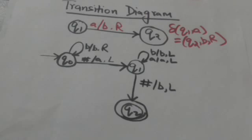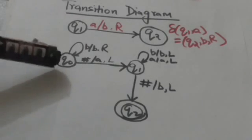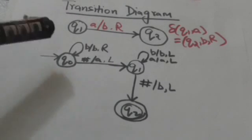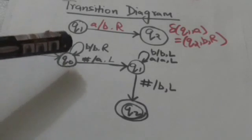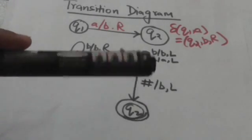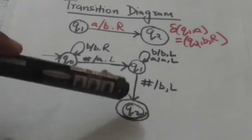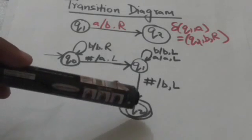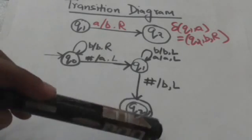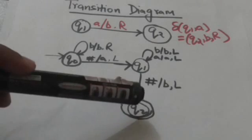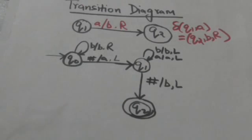The initial state is represented by putting an arrow before the node — here Q0 is the initial state. Final states are represented by encircling the nodes of the graph. Here this node is encircled, so Q2 is the final state of the Turing machine.